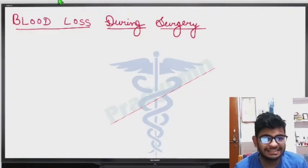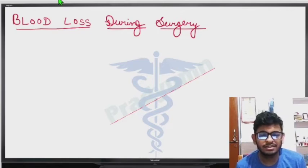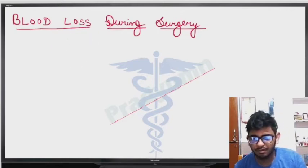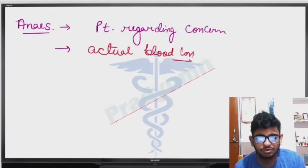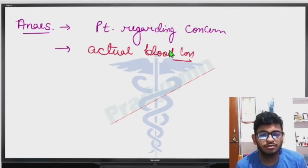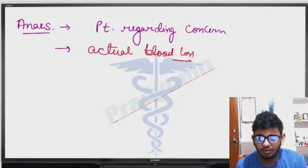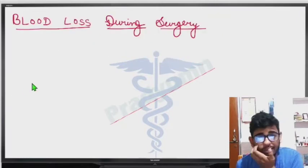In the previous topic of surgical safety checklists, we discussed that we count blood loss. In the sign-out phase, the anesthetist tells the actual blood loss, and in the time-out phase, the surgeon tells the actual blood loss. The main thing is how the blood loss is counted.